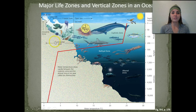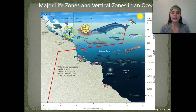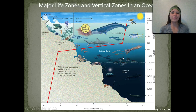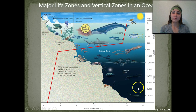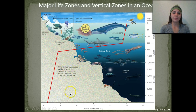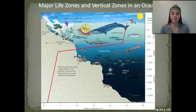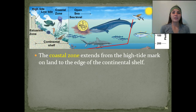We have our continental shelf, which includes our estuarine zone, where we have our high tide and our low tide. The euphotic zone is the zone in which light penetrates. After that we have our bathal zone, where there is very little light — sometimes called the twilight zone. Below that is our abyssal zone, where it's completely dark. Water temperatures drop rapidly between the euphotic zone and the abyssal zone in the area called the thermocline — thermo referring to temperature.